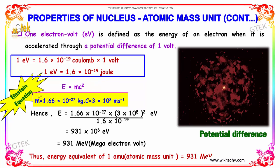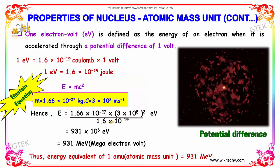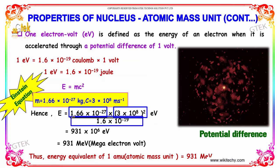Using m equals this value and c equals this value, converting the energy equivalence in eV, we will be getting 1.66 mc square divided by 1 electron volt to convert into electron volt.